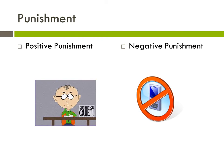Positive punishment — the idea behind punishment is to decrease the behavior. The effect defines whether it is punishment or not, depending on the point of view of the recipient. For positive punishment, we want to add something to decrease the behavior. The most common idea behind this in schools is detention or having to stay in from recess.